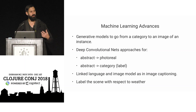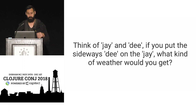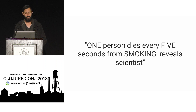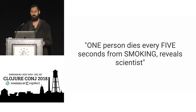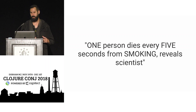We can use generative models going from categories to image instances; deep convolutional nets going from abstract to photo-real and back; image captioning linking language and image models; visual QA; and labeling scenes with respect to weather. But these pieces aren't in big systems where all the gears turn together — they're task-specific and fairly untested for far generalization. Humans can do better. We can also resolve ambiguous phrases — for example, 'one person dies every five seconds from smoking' doesn't mean one specific person dies repeatedly.